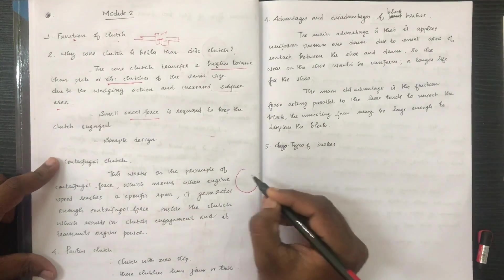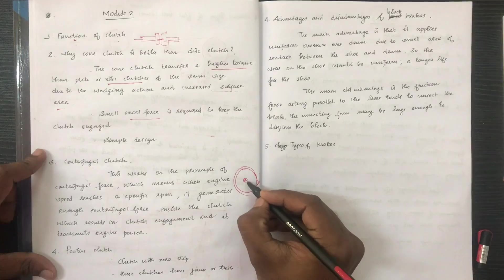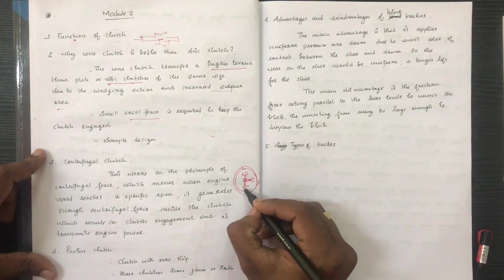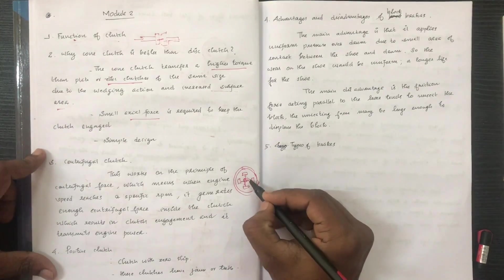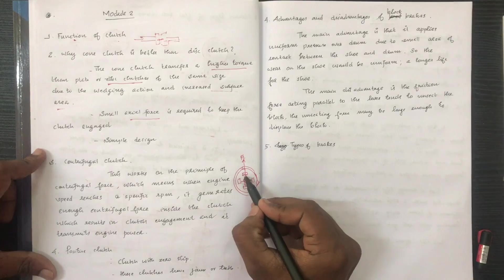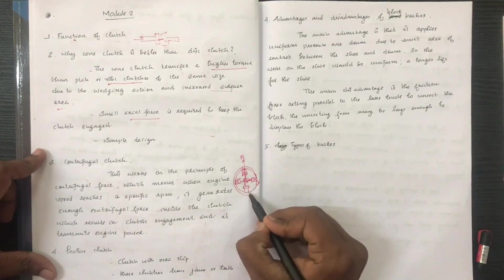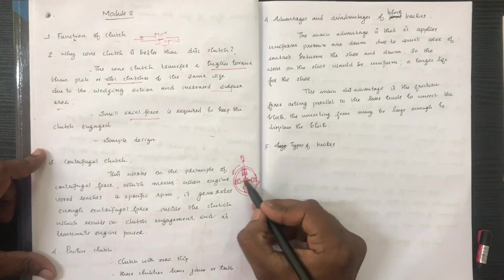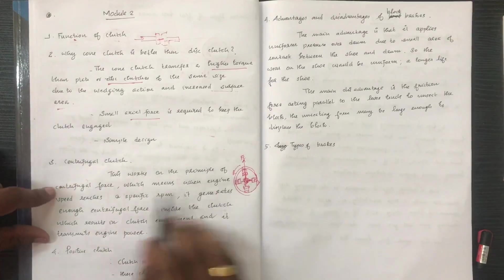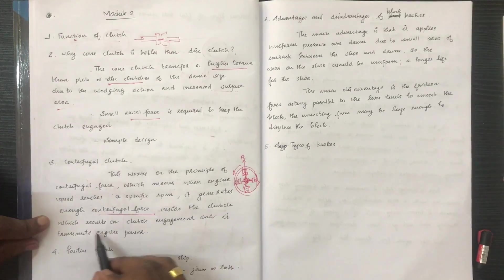This is a driven shaft and a driving shaft with a friction lining. If we rotate this about the centrifugal force, the centrifugal force is relieved. Everything is attached to the center and this is the rotation of the centrifugal force. The centrifugal clutch works on the principle of centrifugal force — when the engine speed reaches a specific RPM, it generates enough centrifugal force inside the clutch, resulting in clutch engagement.